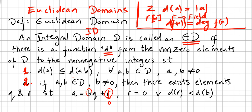We are still on the chapter of divisibility in integral domains. In the previous video we saw the concept of Euclidean domain. An integral domain D is called a Euclidean domain if there is a function d from the nonzero elements of D to the non-negative integers, such that d(a) is less than or equal to d(a times b), for all nonzero a and b in the integral domain.